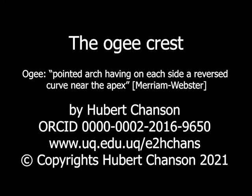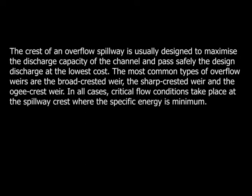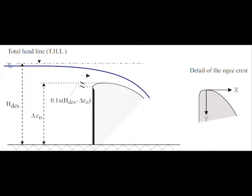The crest of an overflow spillway is usually designed to maximize the discharge capacity of the channel and pass safely the design discharge at the lowest cost. The common types of overflow weir include the broad-crested weir, sharp-crested weir, and ogee-crest weir. In all cases, critical flow conditions take place at the spillway crest where the specific energy is minimum.